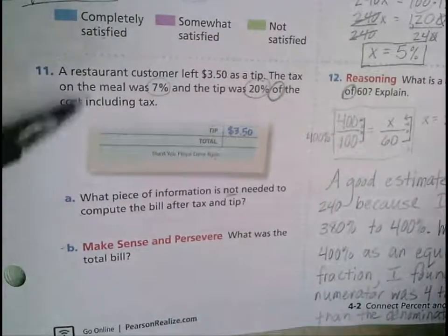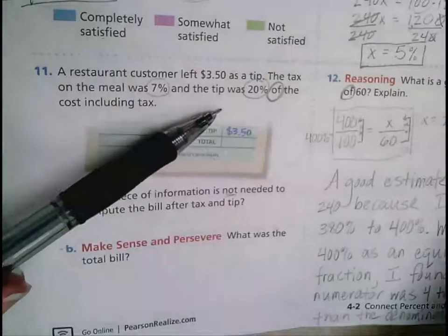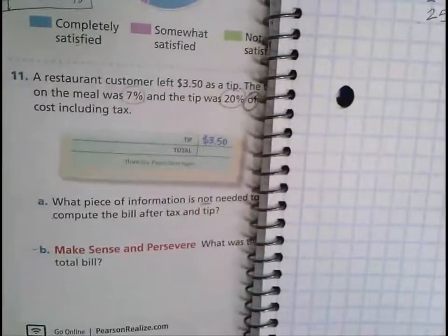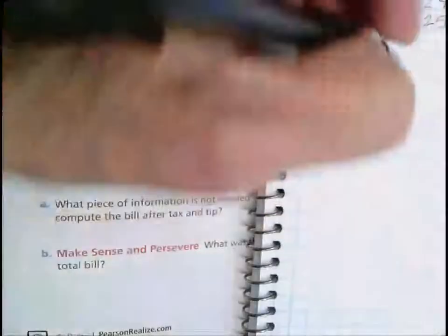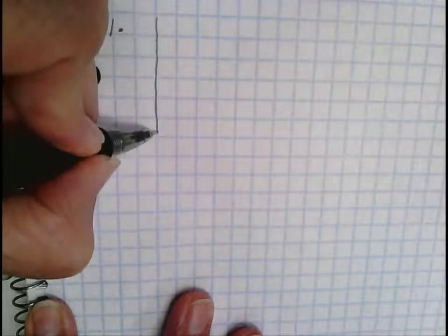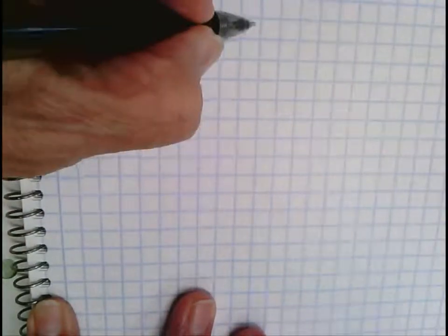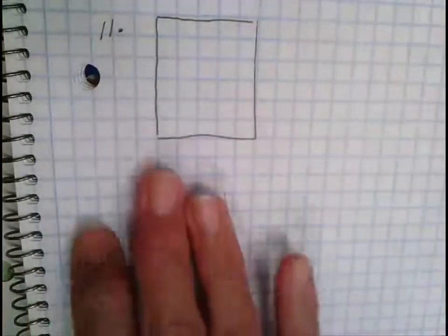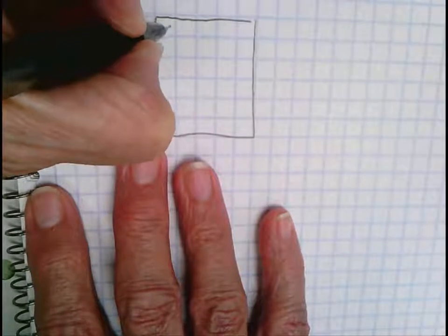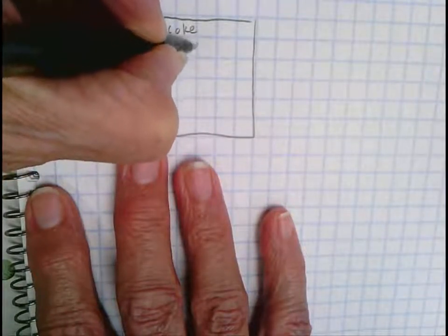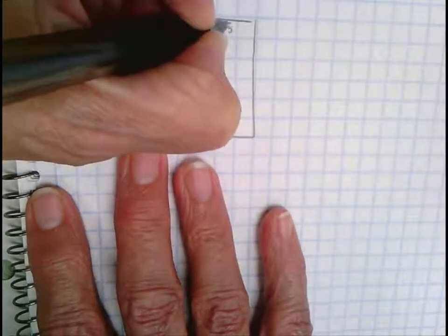I'm going to rewrite this information in my notebook because I like to have things in picture format. It's easier for me. When you get a restaurant bill, you have your items—your Coke and sandwich and whatever you ordered—and then you have your cost.